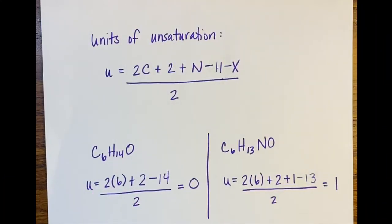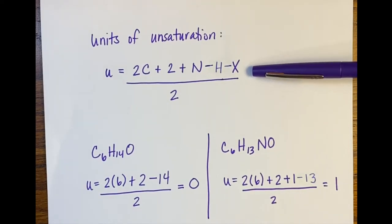When you're analyzing an NMR spectrum, one of the first things you should do with your chemical formula is calculate your units of unsaturation. We saw this formula last semester, and the formula is U = (2C + 2 + N - H - X) / 2.